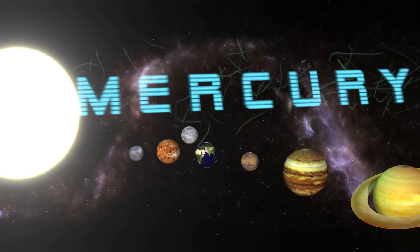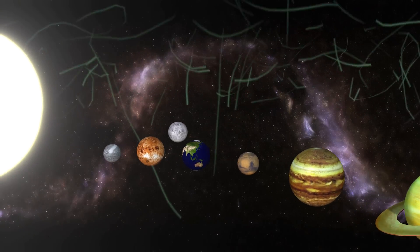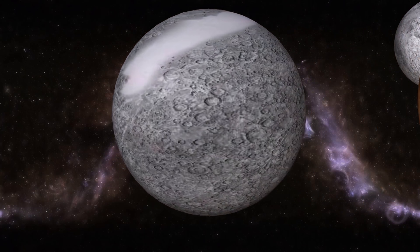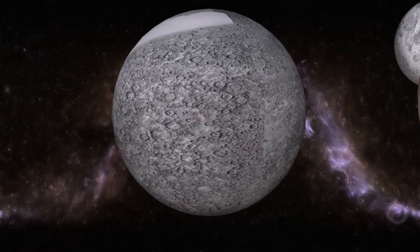Mercury is the closest planet to the sun. As such, it circles the sun faster than all the other planets.